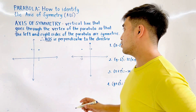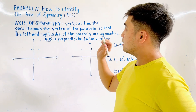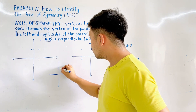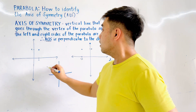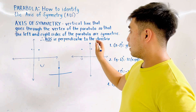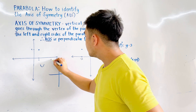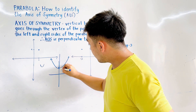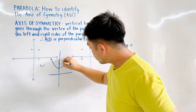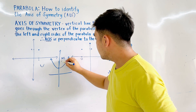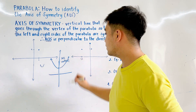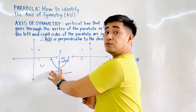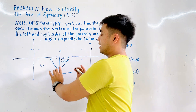Let us have an illustration. The axis of symmetry is a vertical line that goes through the vertex. For example, this is the vertex of the parabola and the parabola is going up. So this is the vertex, this will be our parabola. Therefore, this will be our axis of symmetry, and it is vertical because it separates the parabola into symmetrical parts — the right side and the left side.